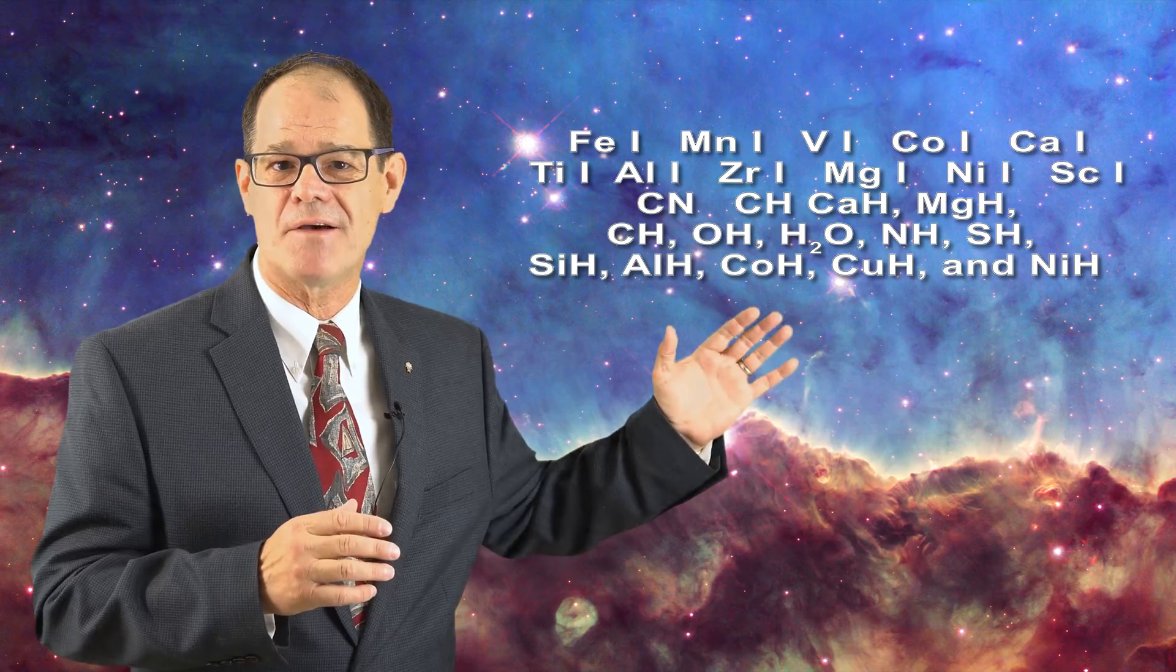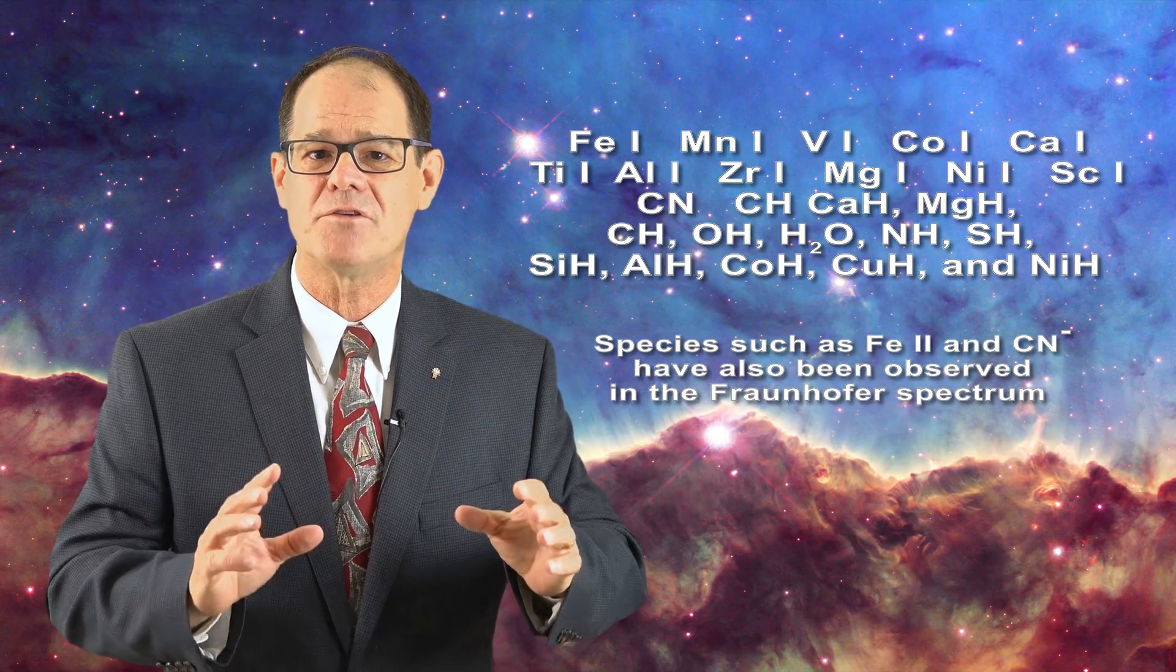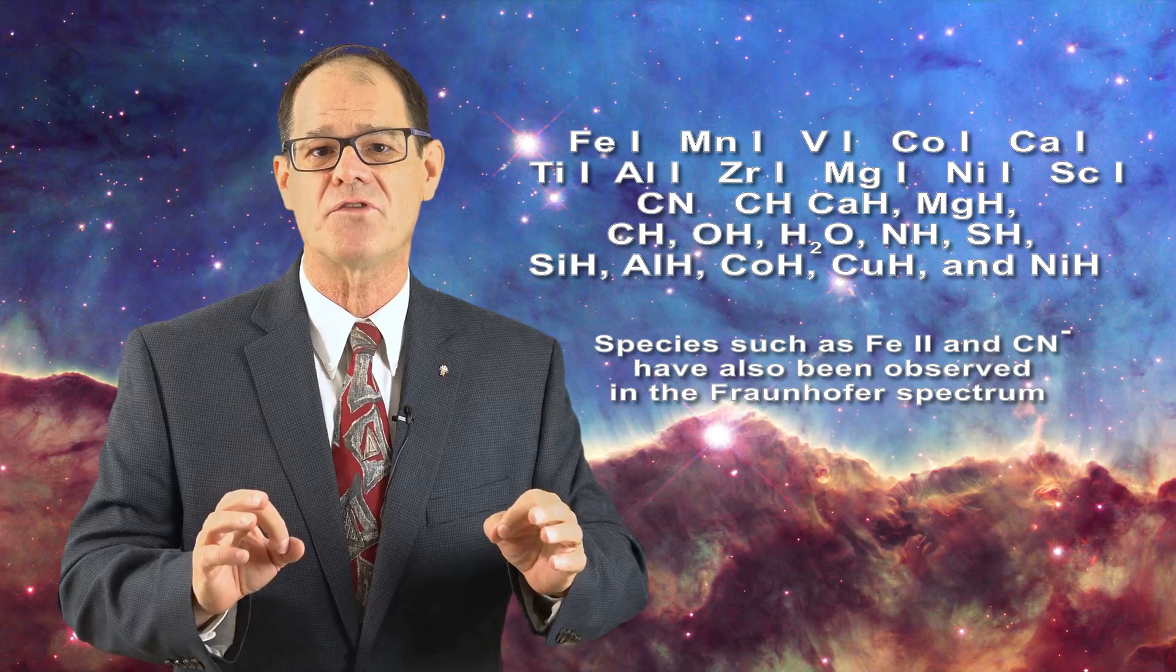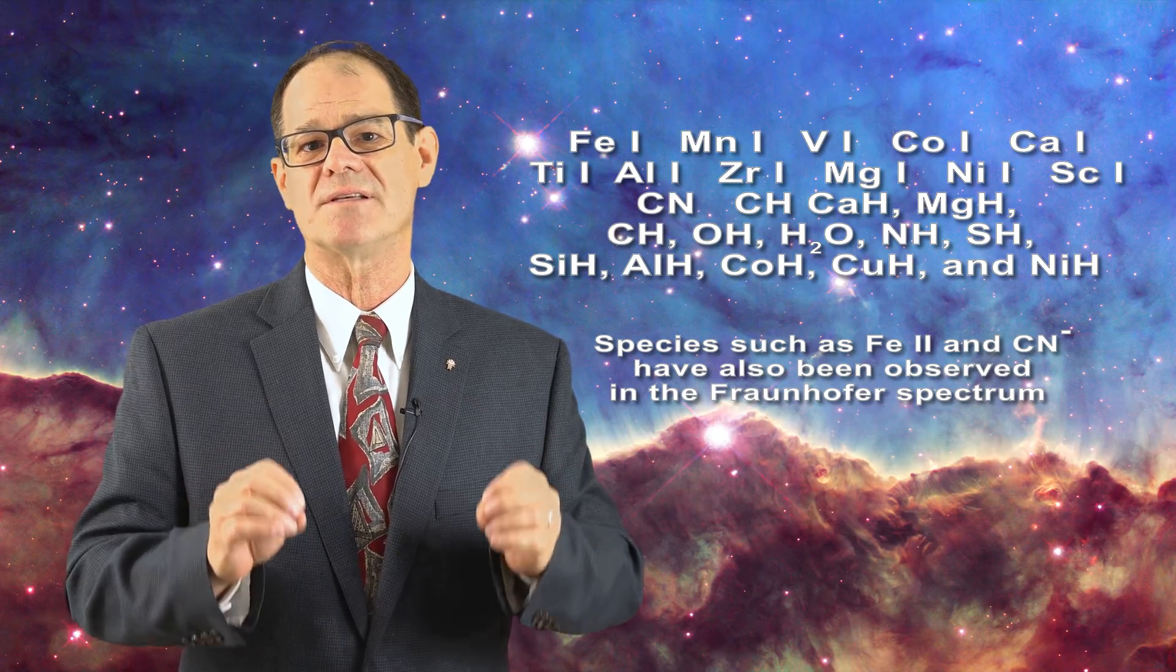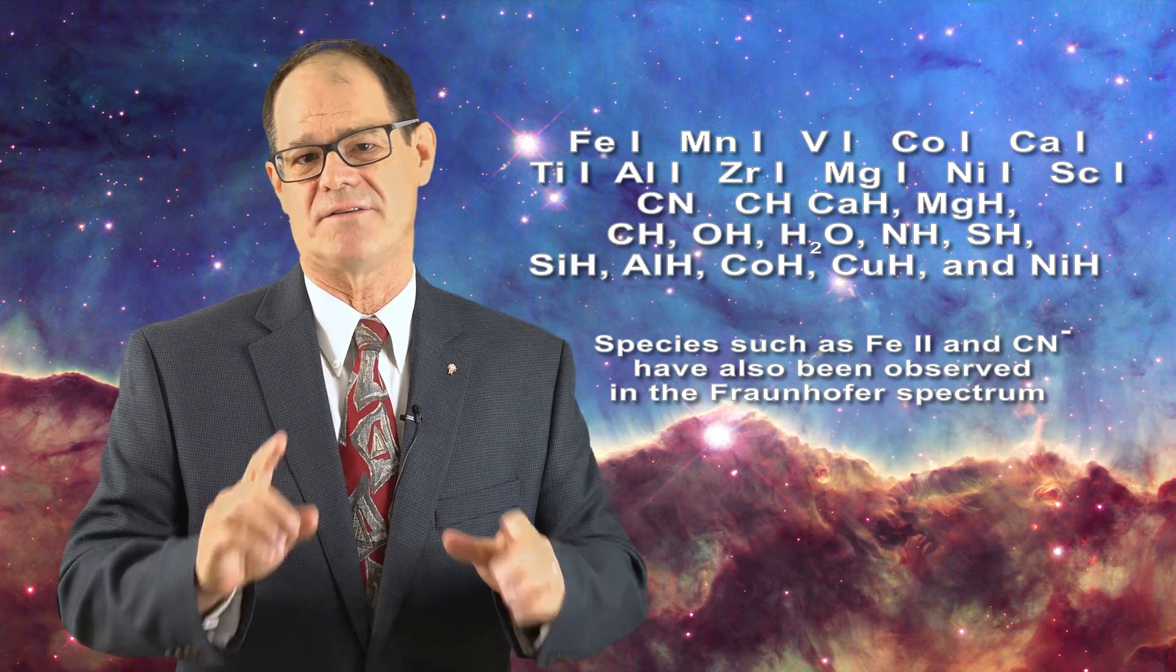What we do observe are neutral atoms and molecules at the level of the photosphere and above sunspots. Here are some examples. The fact that these neutral atoms and molecules exist at the level of the photosphere is sure proof that this layer cannot hold any significant charge.